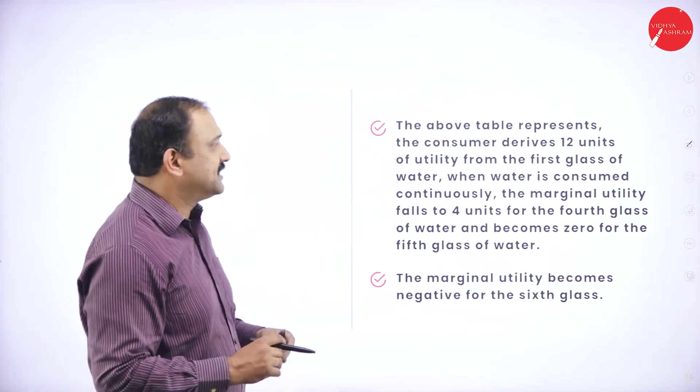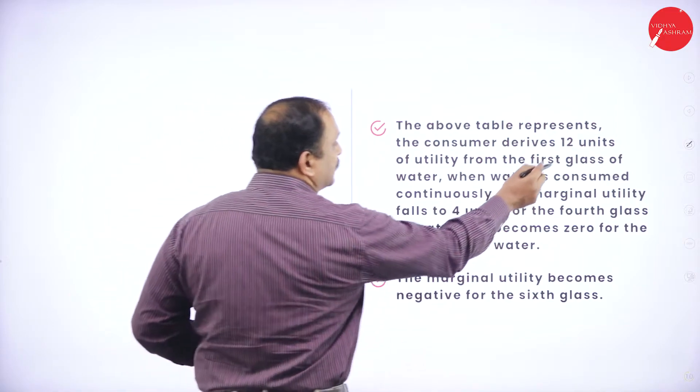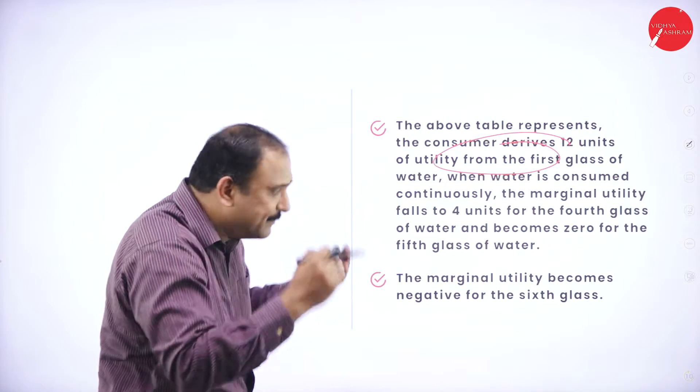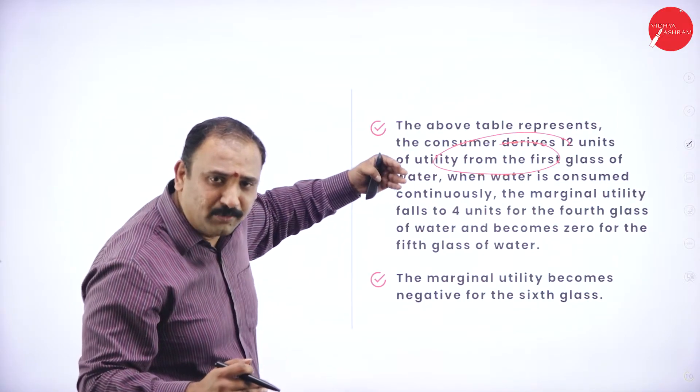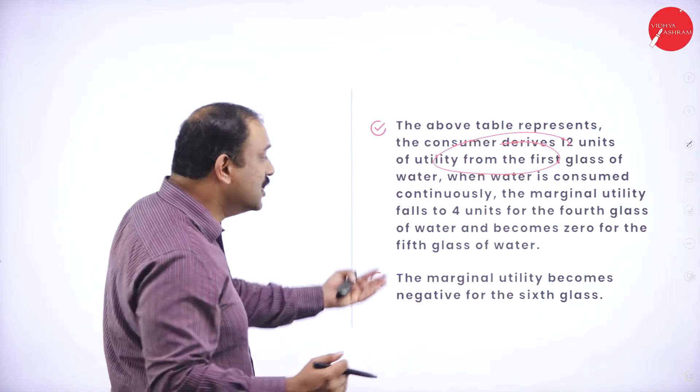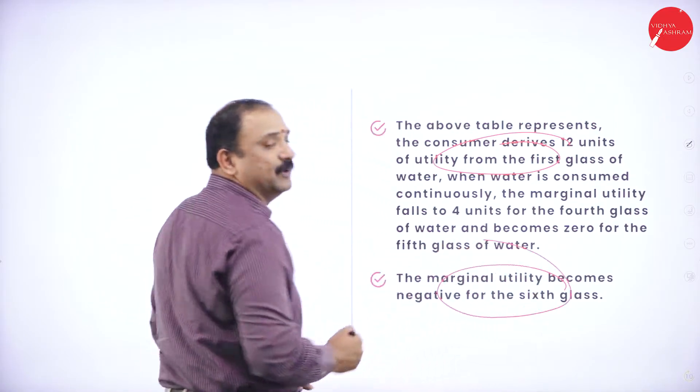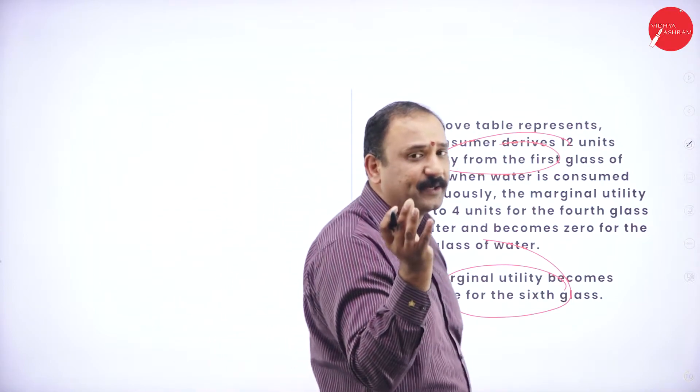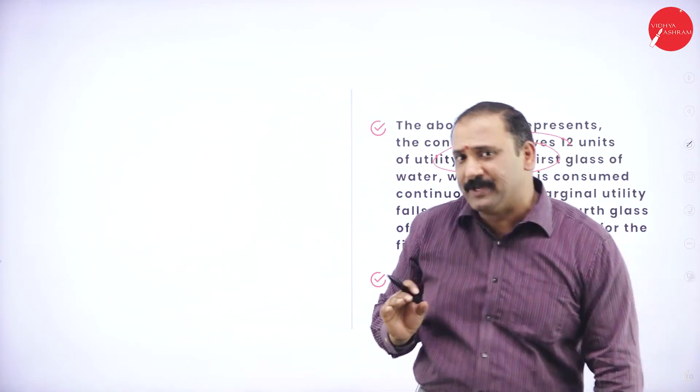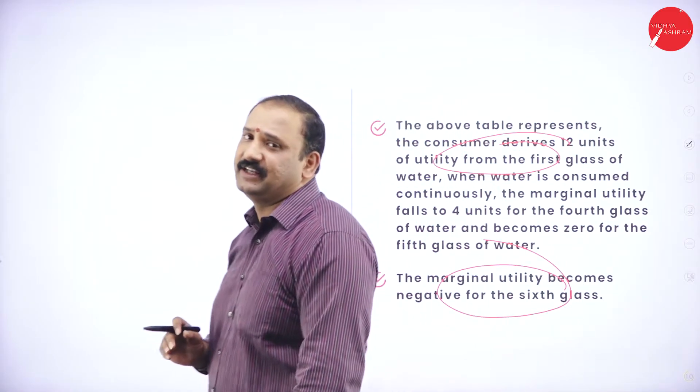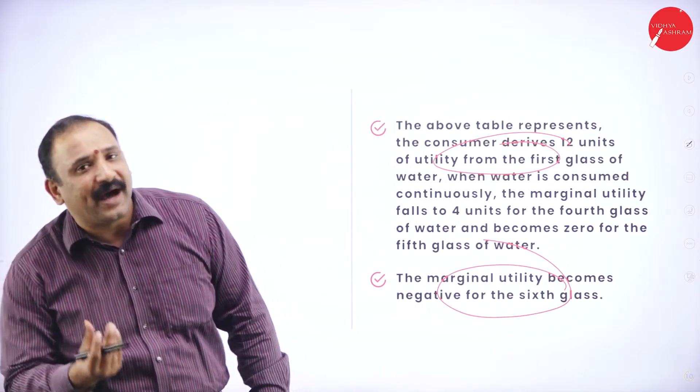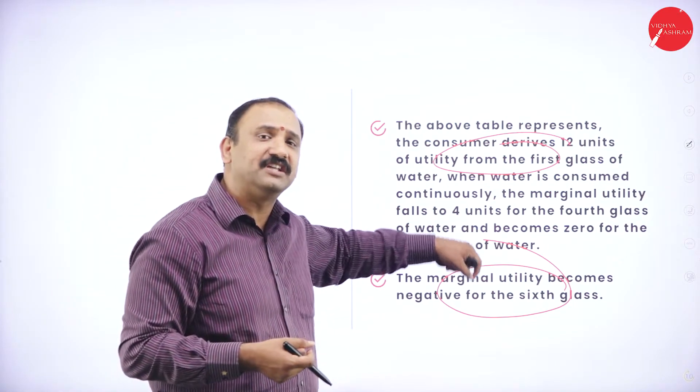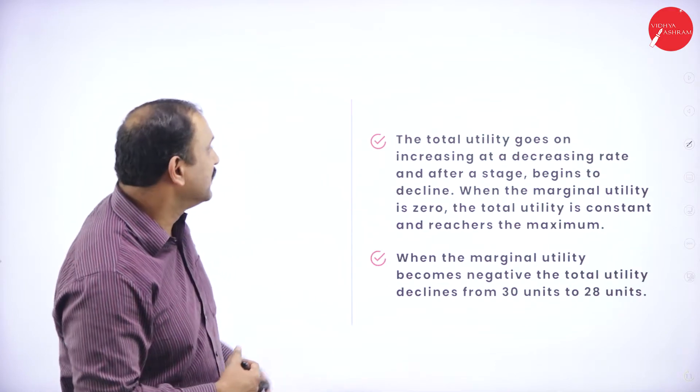The above table represents that the consumer derives 12 units of utility from the first glass and as it starts coming down, the utility value will almost come down to that of zero. The marginal utility becomes negative when it reaches the sixth glass. As we were discussing, more and more when you start consuming something, it starts coming down to a negative value altogether.